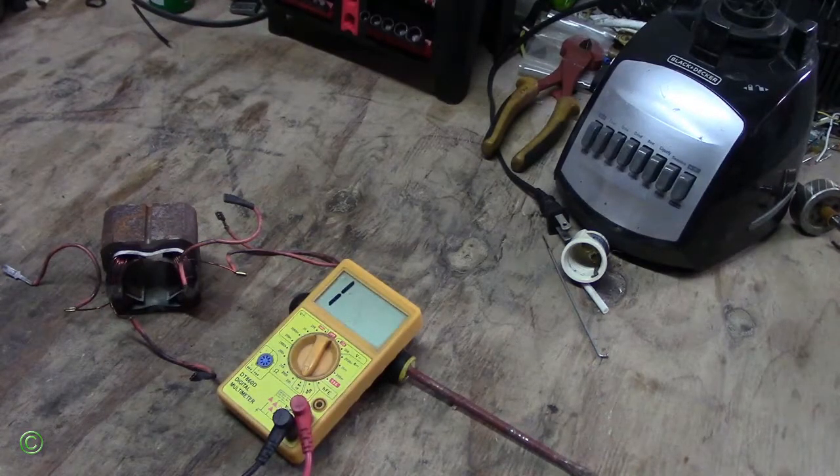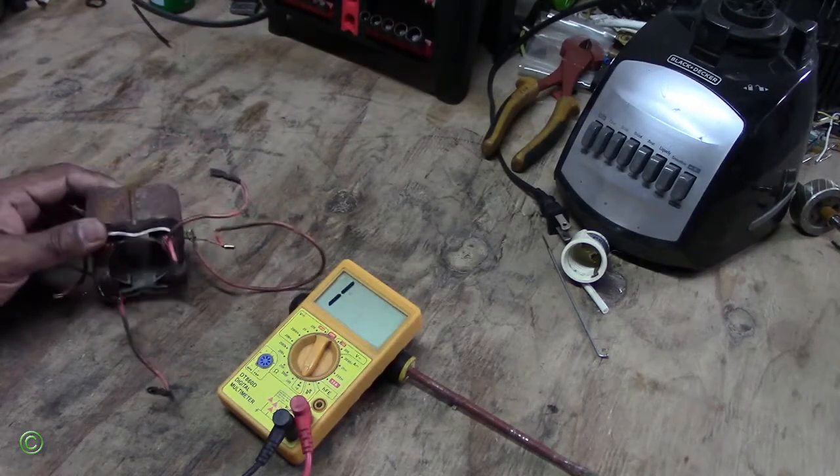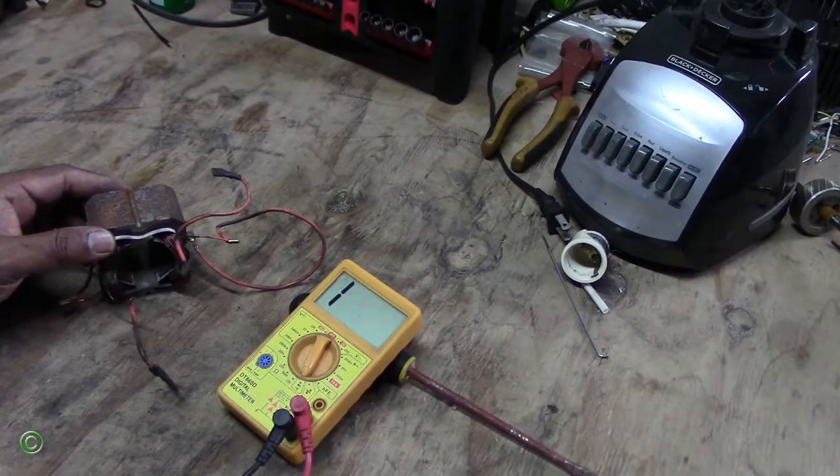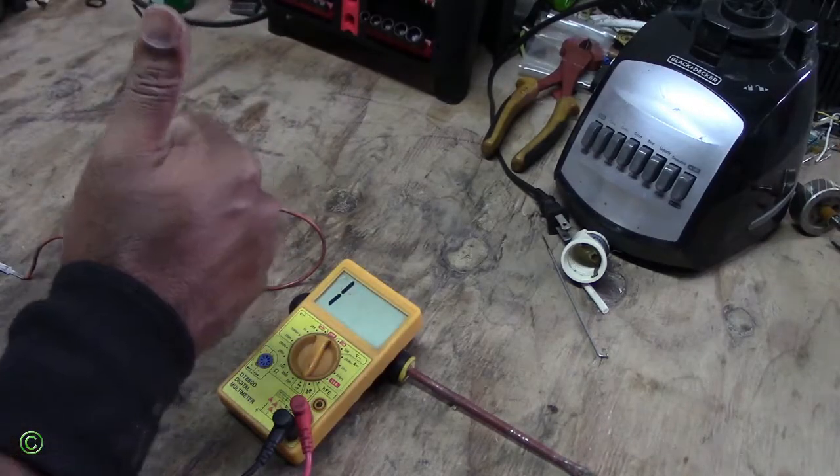Now you know how to check for continuity on a field coil. Thanks for watching. Don't forget to like, subscribe, share, and leave a comment. Until next time, Mr. Fixer 360 saying good luck with all your repairs.